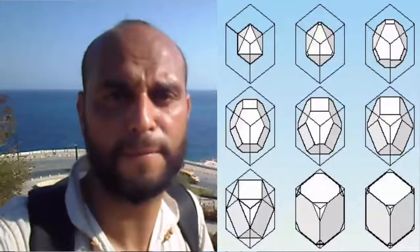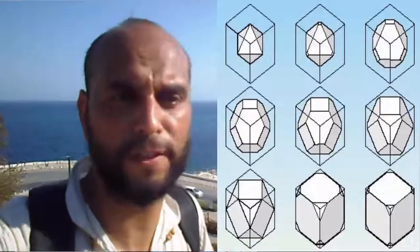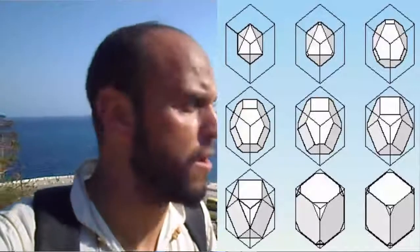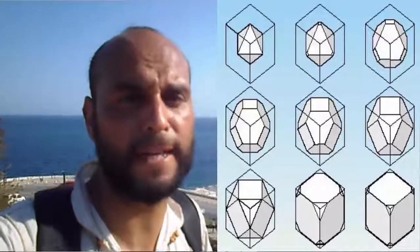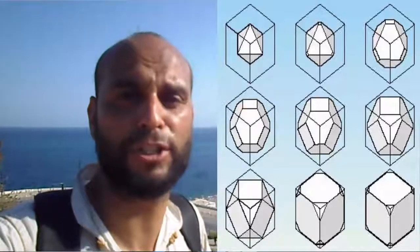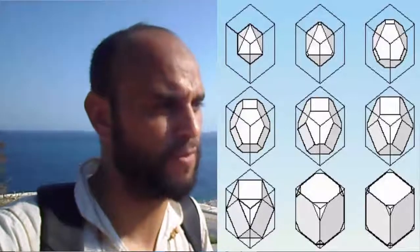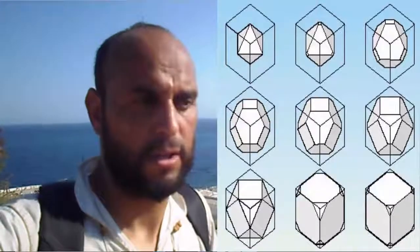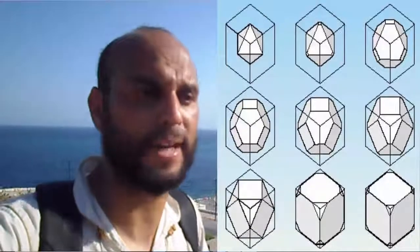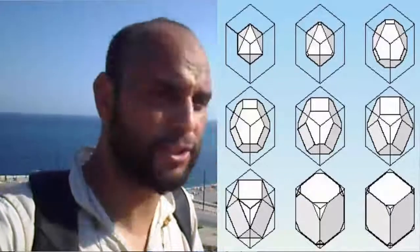Natural diamonds occur as single crystals, as aggregates of a few crystals, or as crystals of countless small crystallites. Different morphologies — shape, size, number of crystals, etc. — reflect the ground conditions and provide valuable information about the process that leads to diamond formation. The classification and interpretation of the morphologies of diamonds has been a matter of debate for more than a century.